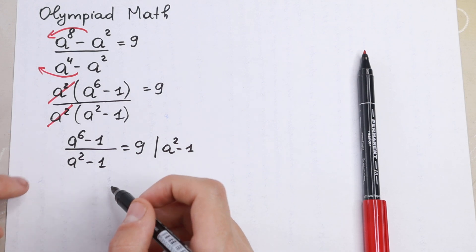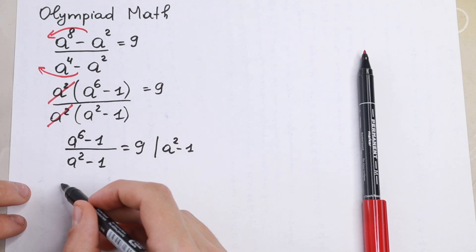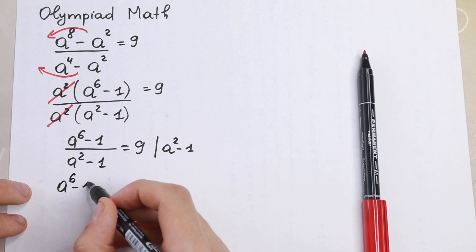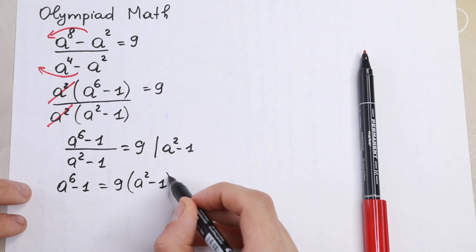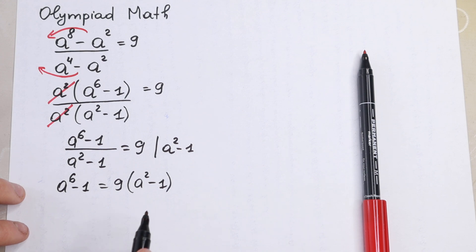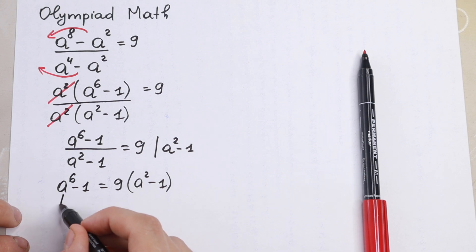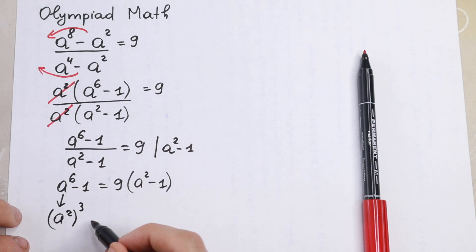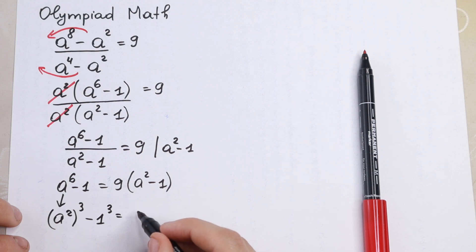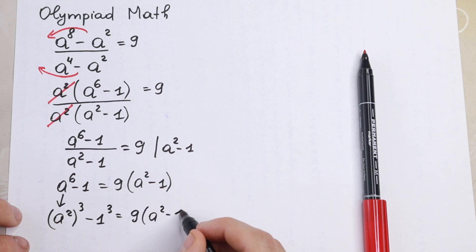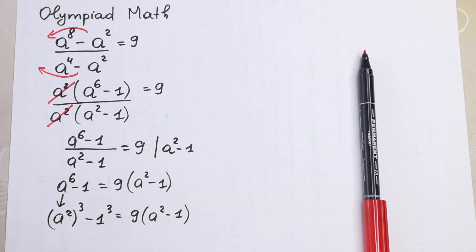Take a look — we multiply both sides by (a² - 1). So a to the sixth power minus one equals nine times (a² - 1). We cancel the denominator and get our expression. Moreover, we can write a to the sixth power as (a²)³, so we have (a²)³ - 1³ equal to nine times (a² - 1).